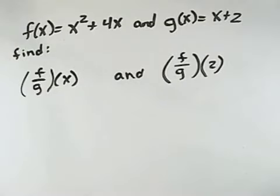For this problem, we're given two functions: f of x equals x squared plus 4x, and g of x equals x plus 2.